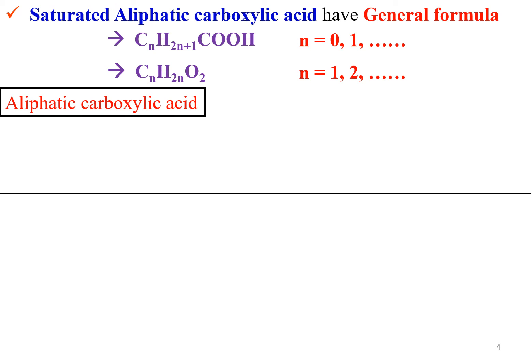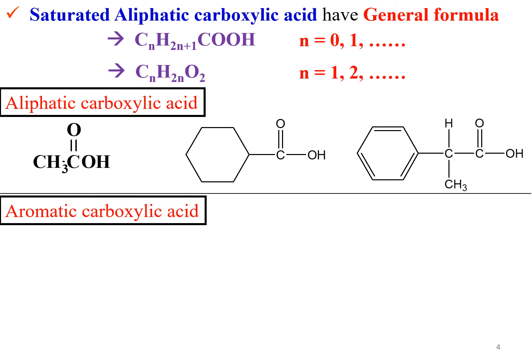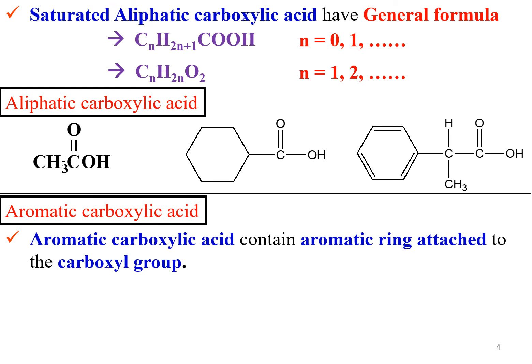Aliphatic carboxylic acid — see the given example. Aromatic carboxylic acid contains an aromatic ring directly attached to the carboxyl group, meaning the benzene ring must be directly attached to the carboxyl group. Look at the given example.